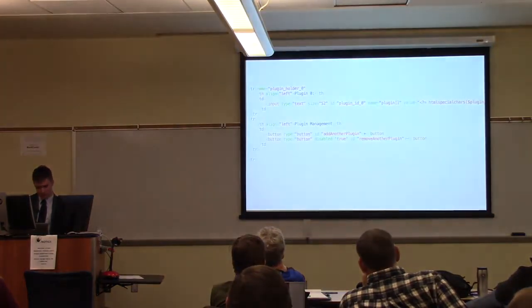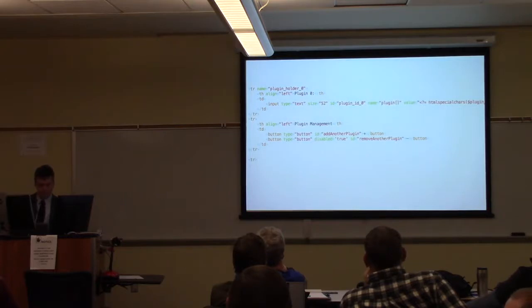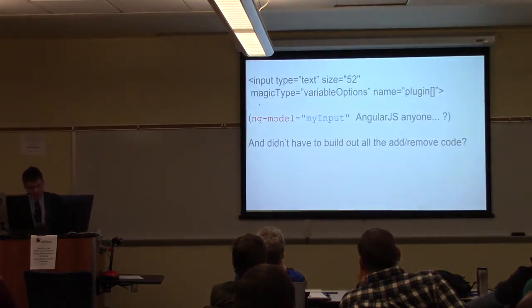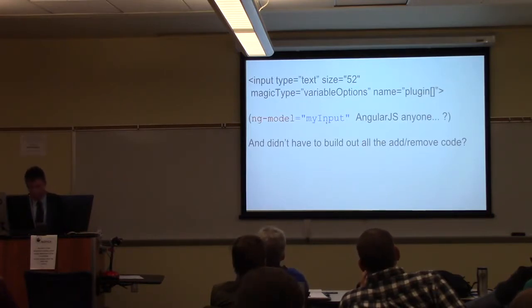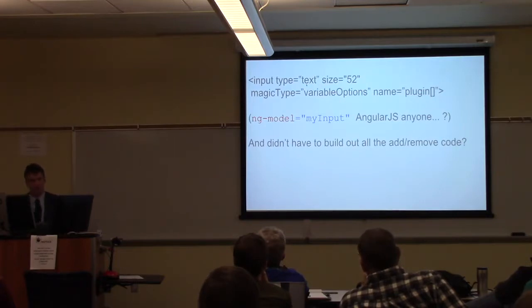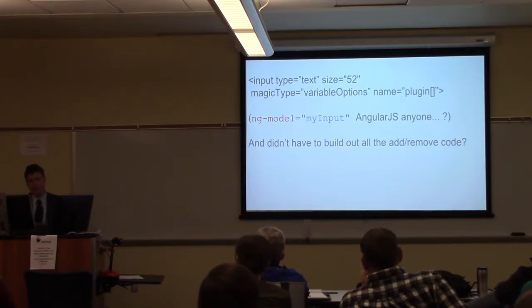Wouldn't it be cool if instead of all this HTML duplication for plugins — the remove-another, add-another rows in our table — we had something like this? We have this magic type attribute, or whatever you want to call it. If you know Angular, you've seen this type of notation before, where on document onload I search for this, create the add and subtract button dynamically, and all the options are set based upon the parent. We could get the size, the type, everything else, and you wouldn't even have to write any of that JavaScript code. You just include this magical annotation, and the onload runs through, looks for these, creates the add and subtract buttons, and then modifies the DOM dynamically.